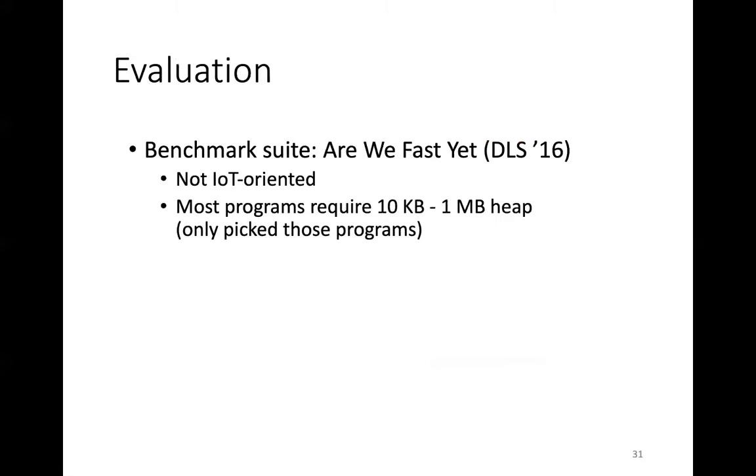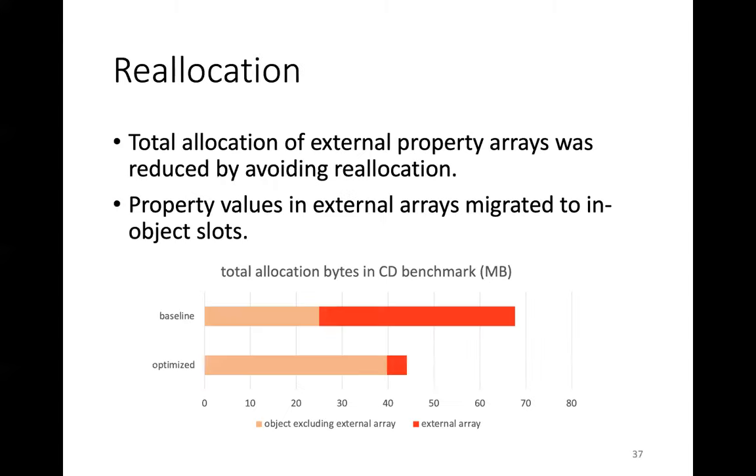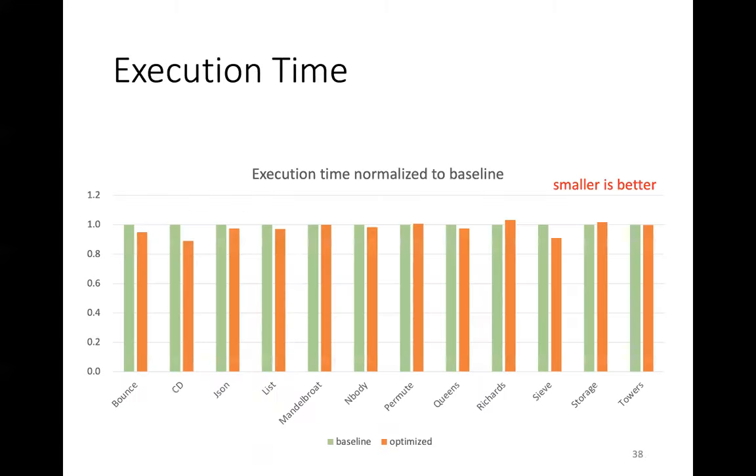We implemented these optimizations and evaluated their performance. We use the benchmark suit from a dynamic language symposium paper, are we fast yet? Although these are not IoT-oriented benchmarks, most programs require 10KB to 1MB heap, which is our target. First, we measured how much reallocation was reduced. This red part of this chart shows the total reallocation of external property arrays. It was reduced by avoiding reallocation. Note that this orange part, objects excluding external property arrays increased, because property values in external arrays migrated to in-object slots.